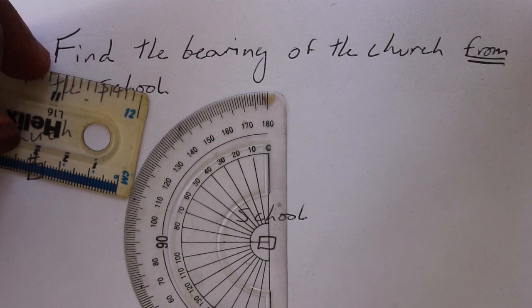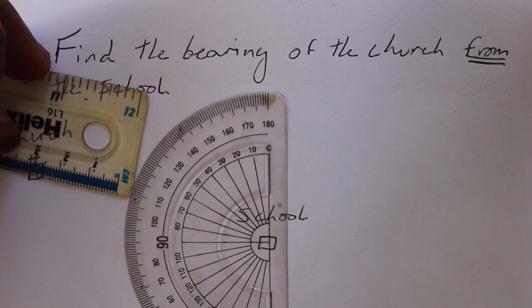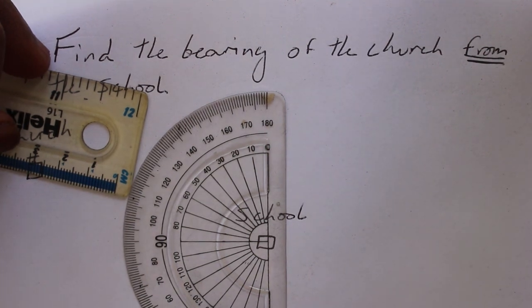Alright, so we continue - this is 90, 200, 10, 20, 30, 40, 50, 60, 70, 80. What we have here is about 283 degrees. And that is our answer. Thank you for having us here so much. Thank you.